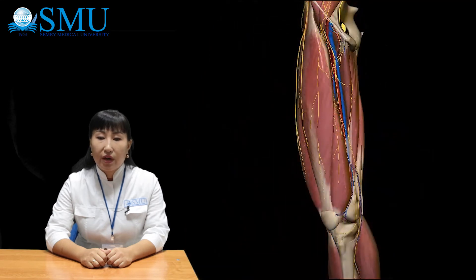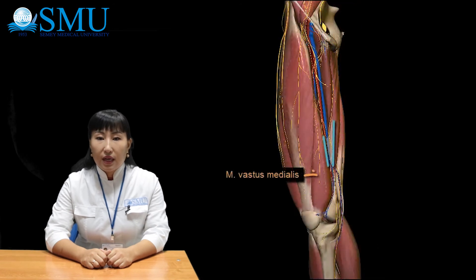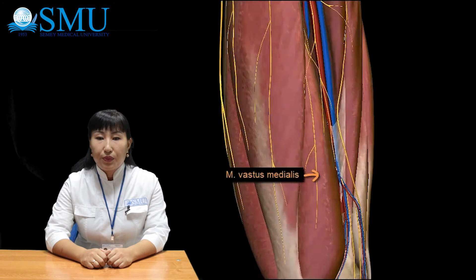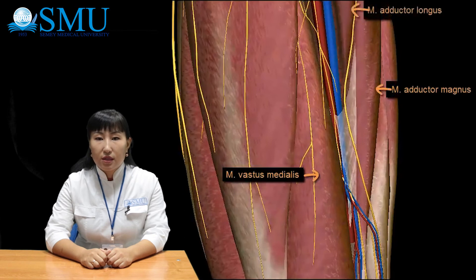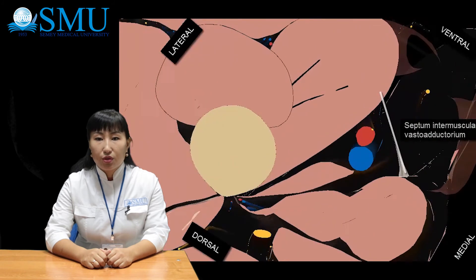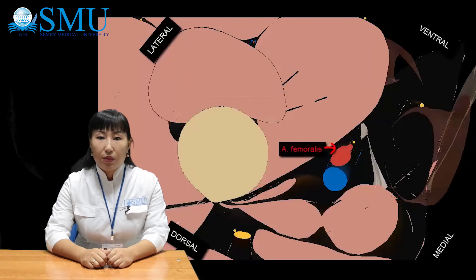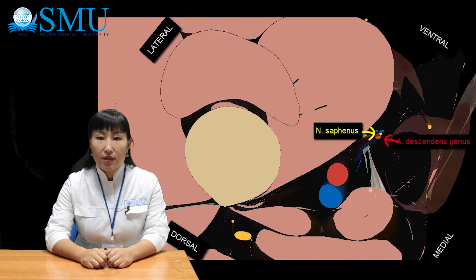Let's move on to the adductor canal. The borders of the canal are: the lateral wall is represented by the vastus medialis, the medial wall is the adductor magnus, and the superior medial wall is the adductor longus. The vascular bundle of the canal consists of the femoral artery, femoral vein, saphenous nerve, and descending genicular artery.